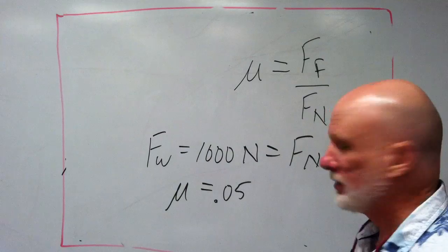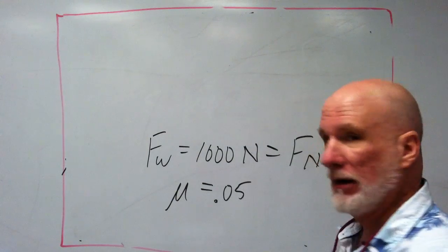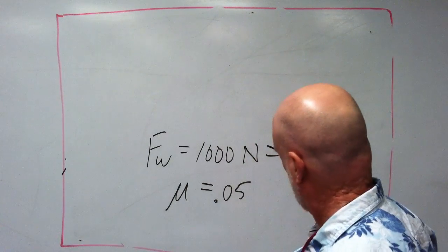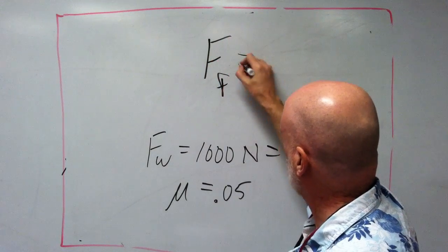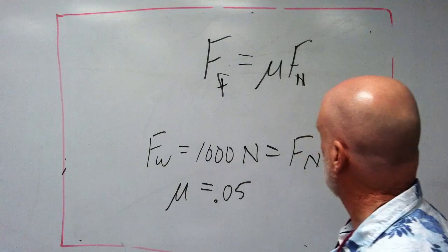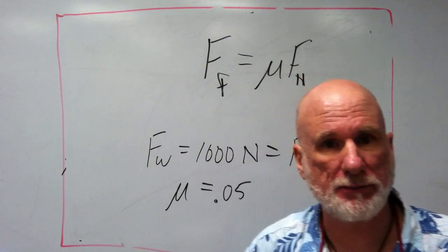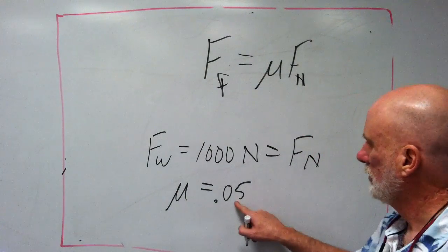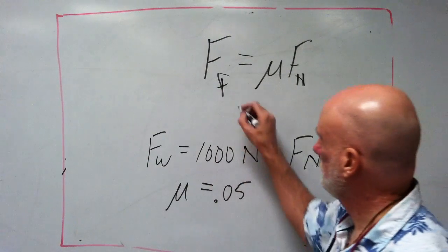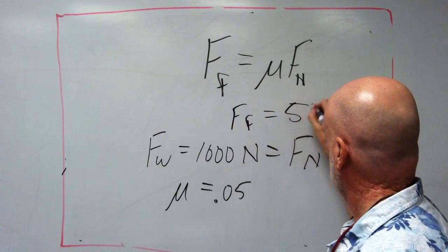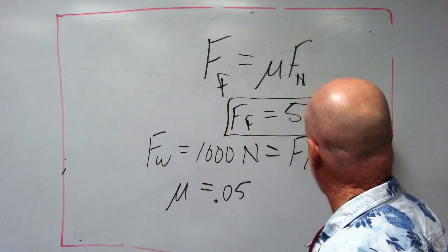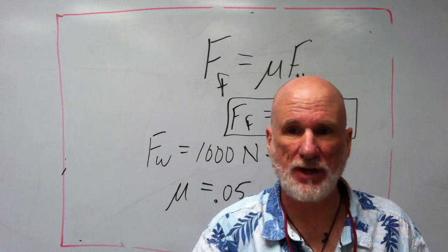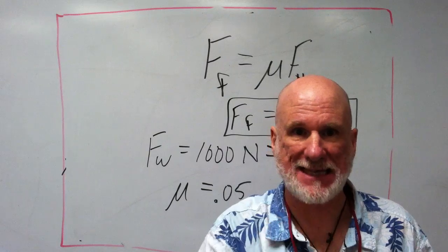Now, the force of friction equals mu times Fn. I used some pretty simple numbers, so 0.05 times 1000 equals 50 newtons. 50 newtons, that's it. 50 newtons is the force of friction, and that's the answer.